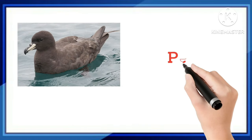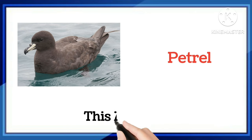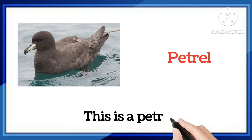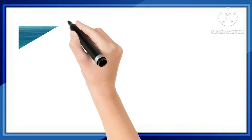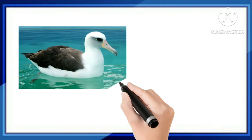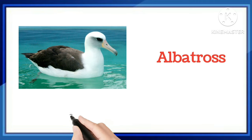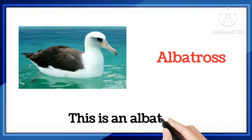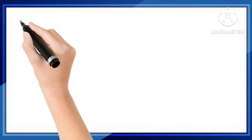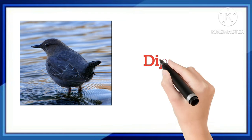Which word is this, kids? This is a petrel. This bird is petrel. Which word is this? This is an albatross. Once more: this bird is albatross. Tell me, which word is this, kids?